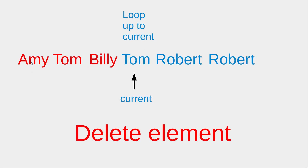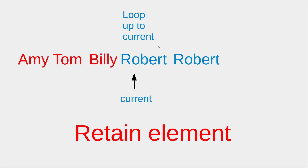I would loop over the portion of the ArrayList from the very beginning to the one indicated by the current index. I would find that Tom is a repeated element because it already appears in the second element of the ArrayList. So I would simply remove this element. After the removal, the remaining elements shift to the previous position. At the same time, I would keep the current index at the same position.